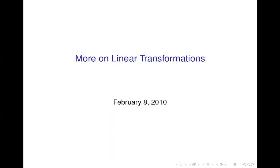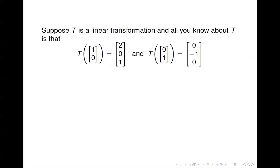We're going to start with more on linear transformations. Suppose we have a transformation T, and suppose that all you know about T is that the vector (1,0) gets mapped to (2,0,1), and you know that (0,1) gets mapped to another vector. Just from looking at this, you can tell that T maps R2 to R3 — we're taking vectors in R2 and mapping them to R3.